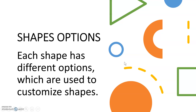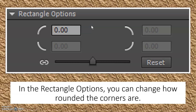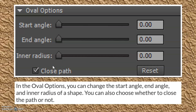The Shapes Option. Each shape has different options which are used to customize shapes. In the Rectangle option, you can change how rounded the corners are. In the Oval option, you can change the start angle, the end angle, and the inner radius of a shape. You can also choose whether to close the path or not.